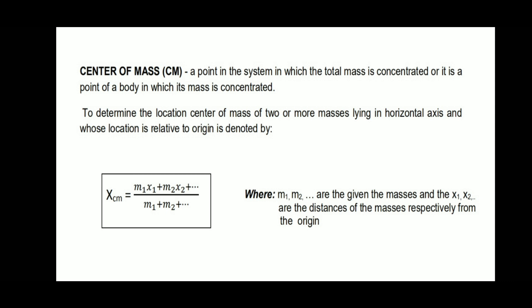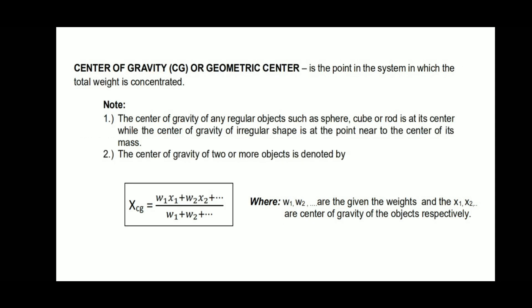Center of mass is a point in the system in which the total mass is concentrated, or it is a point of a body in which its mass is concentrated. To determine the location of the center of mass of two or more masses lying in a horizontal axis, whose location relative to the origin is denoted by x sub cm equals m sub 1 times x sub 1 plus m sub 2 times x sub 2, and so on, all over m sub 1 plus m sub 2 plus dot dot dot, where m sub 1 and m sub 2 are the masses, and x sub 1 and x sub 2 are the distances of the masses respectively from the origin.